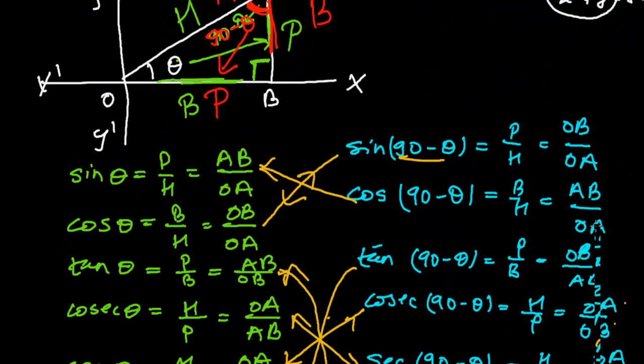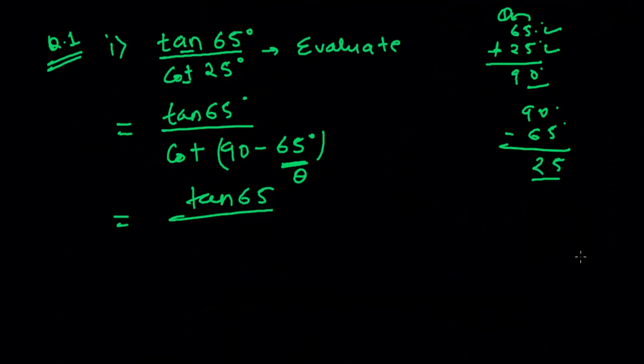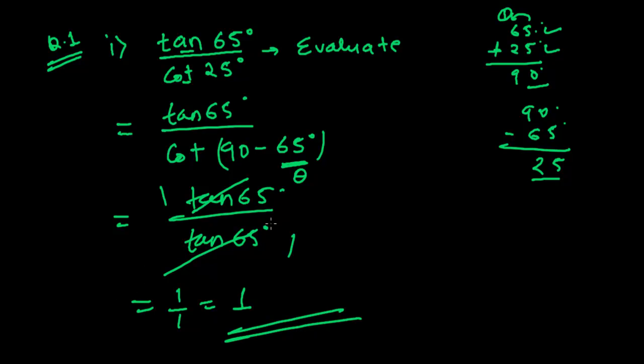Let me write it properly. So here we'll have cot(90° - 65°) equals tan 65°. Now here, tan 65° divided by tan 65° is tan 65° over tan 65°, so 1 upon 1 equals 1. This is our answer. So like this we have to evaluate such equations.